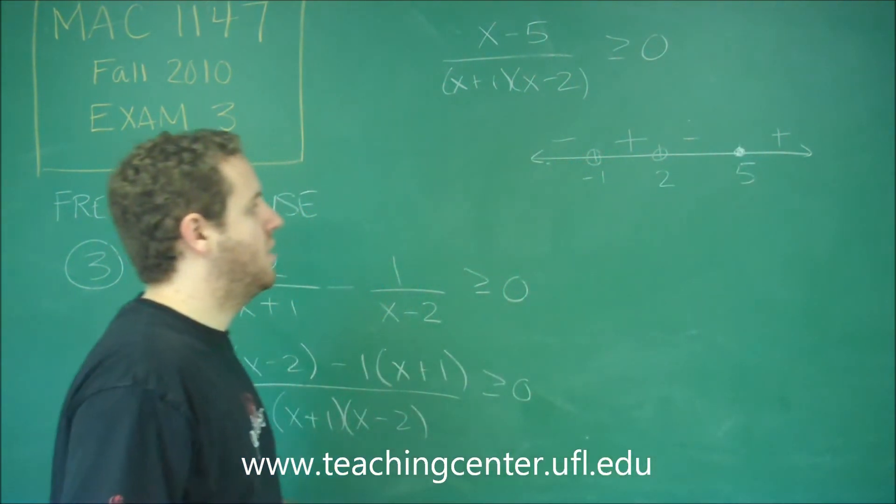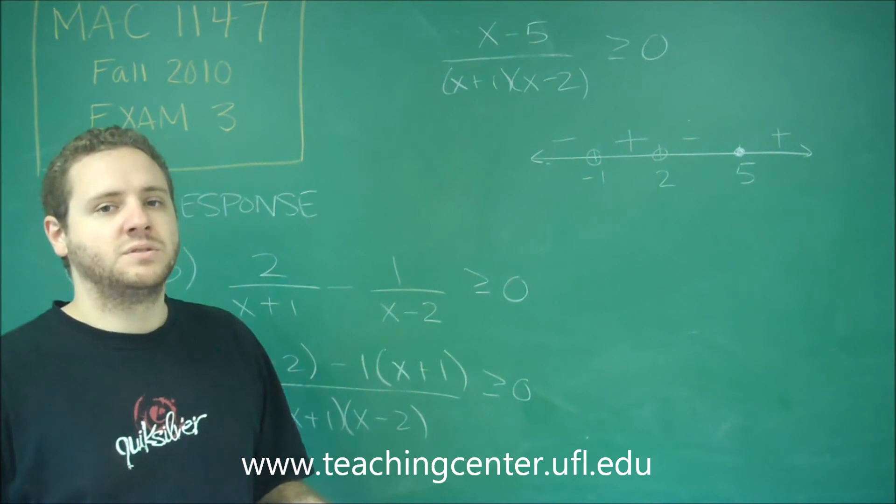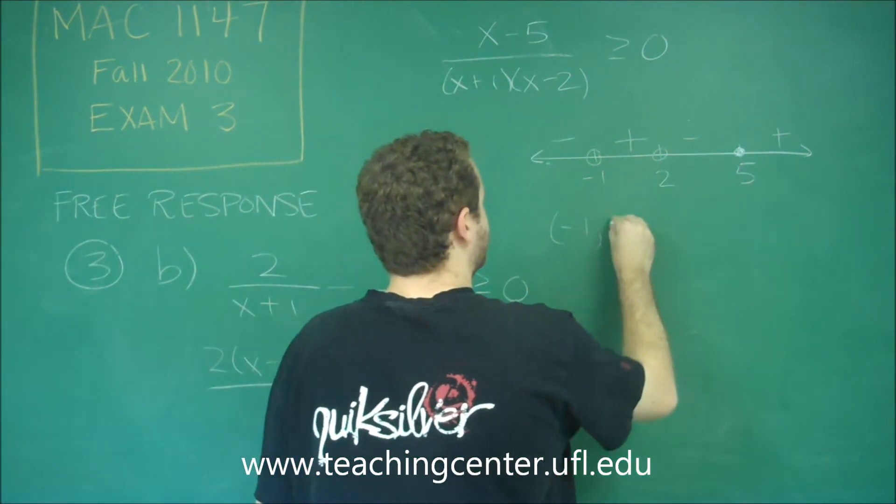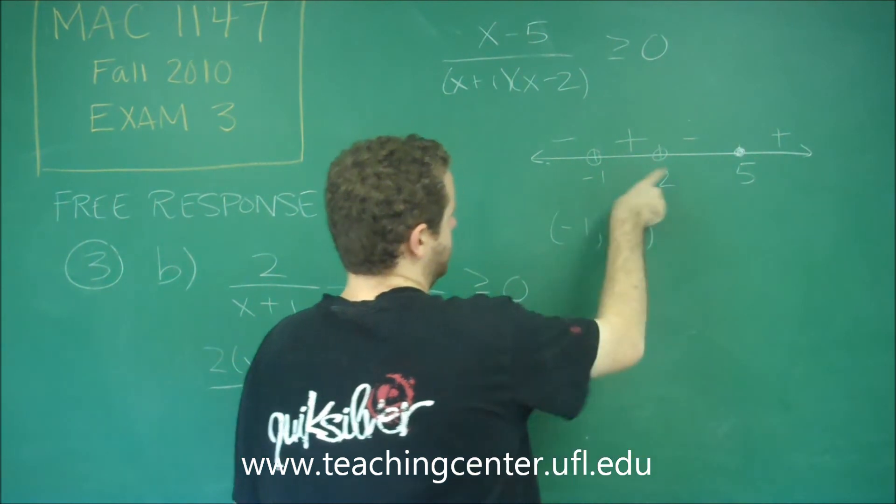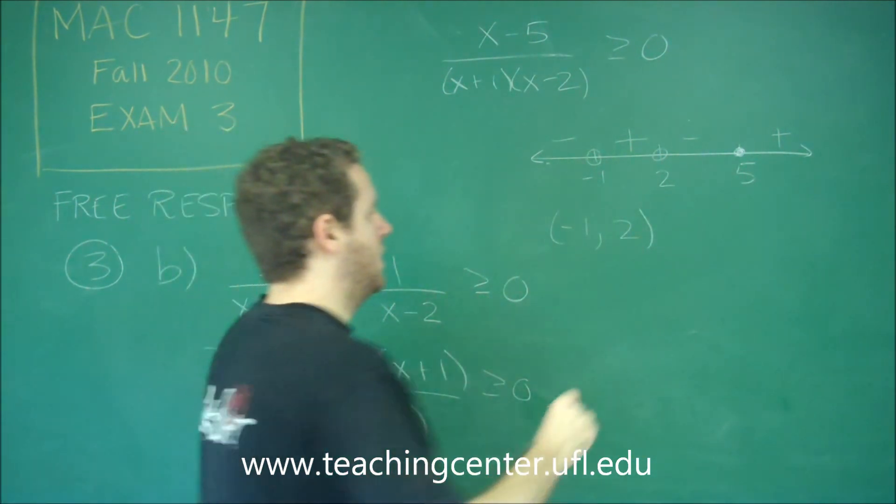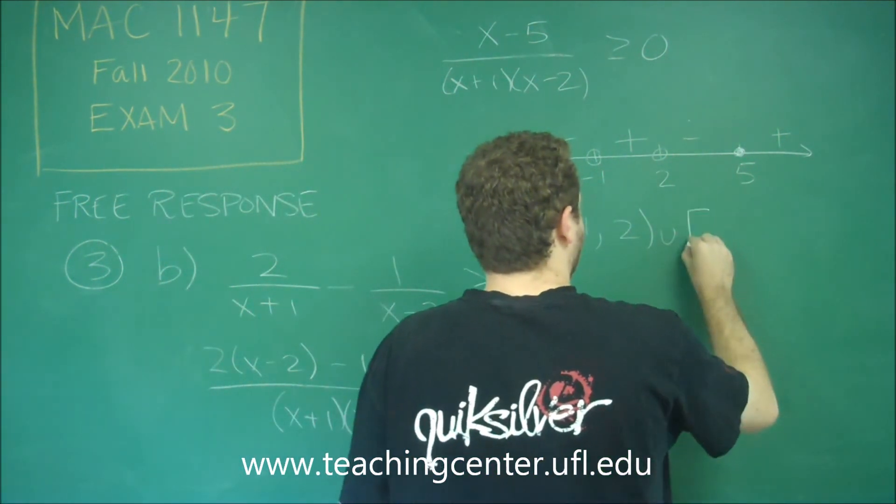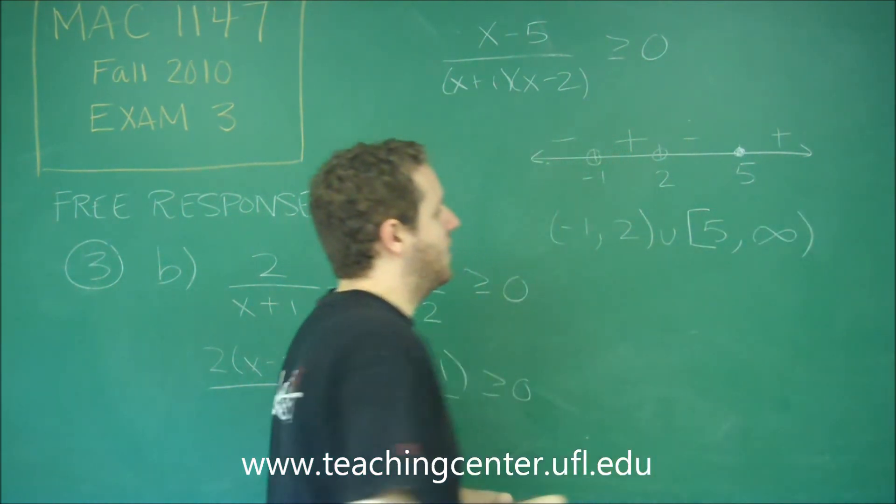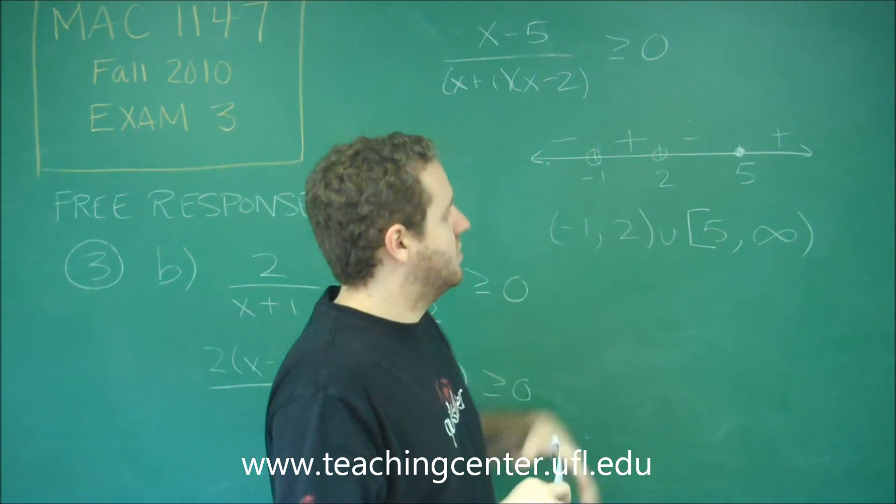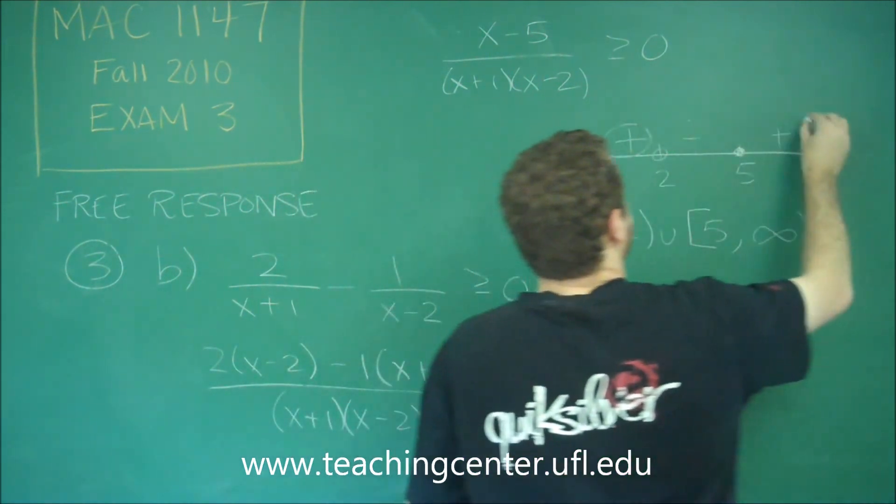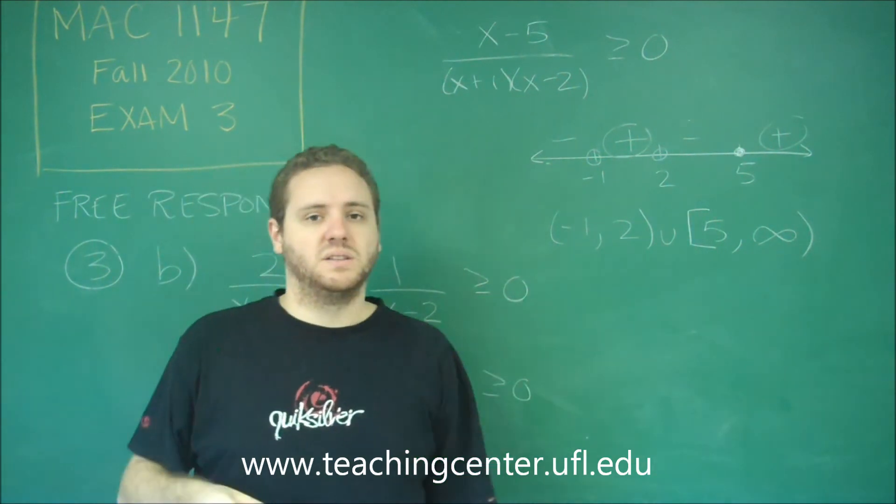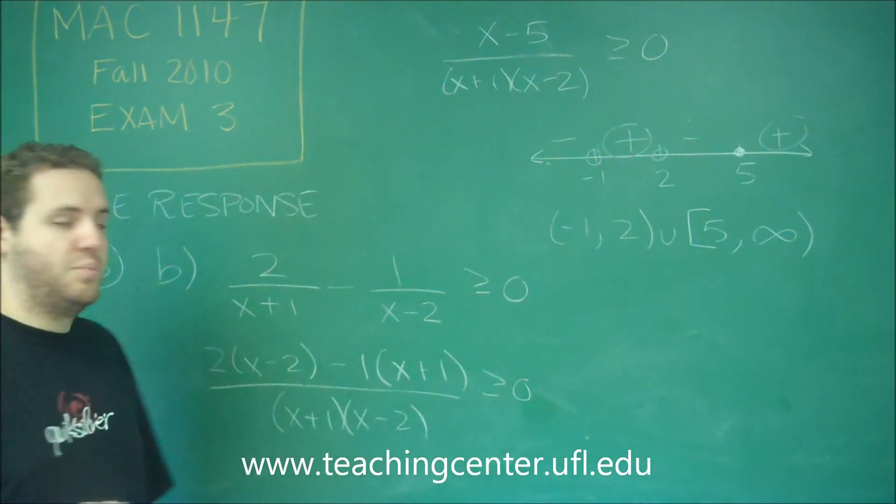And now we just need to write our positive intervals given this number line. You can see here we have the interval negative 1 to 2, both in parentheses because those are open circles. And then we have the interval 5 to infinity with a bracket on 5 because 5 was included. So these are the two intervals we wanted. And we could write this accordingly using the parentheses and brackets correctly.